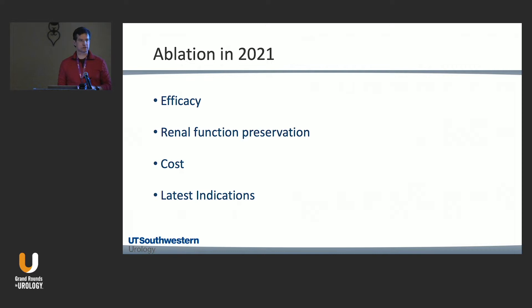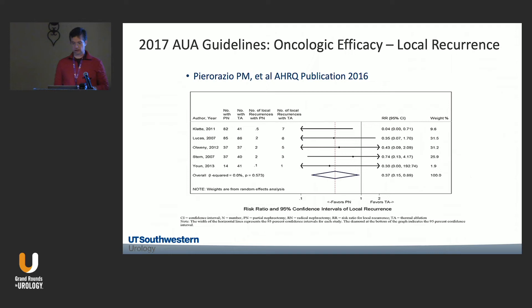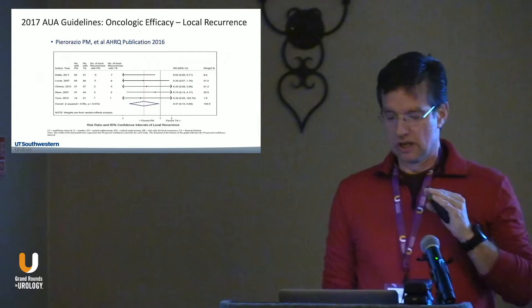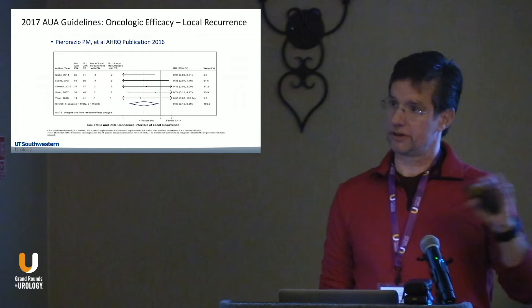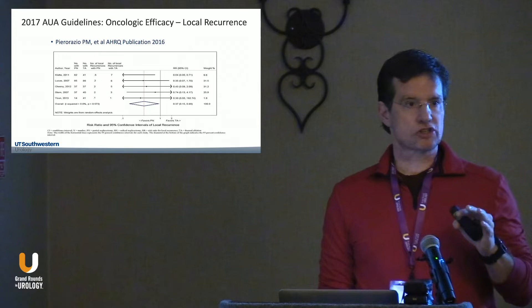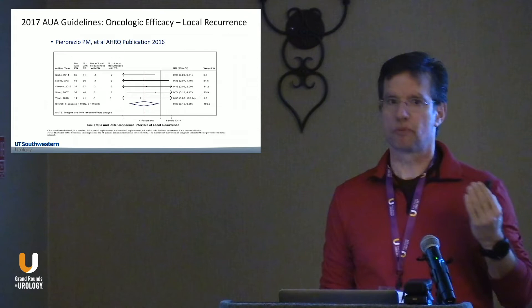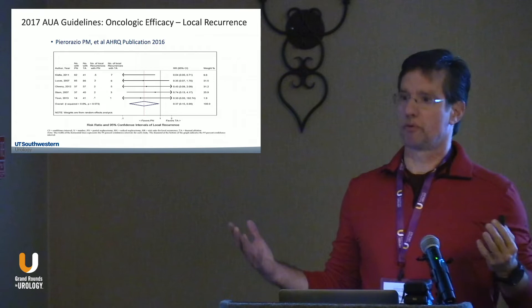I'm going to go over efficacy, functional advantages of ablation, cost, and the latest indications. The 2017 guidelines noted a measurably slightly higher chance of incomplete treatment with ablation compared to partial nephrectomy — that is residual tumor that may recur. This is a function of being too precise: if I'm trying to kill a 2.5 cm tumor and do a 2.6 cm ablation, heat sink effects may leave residual tumor. A 3.5 cm ablation zone would achieve 100% success.